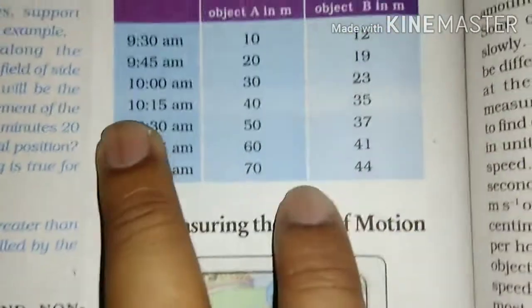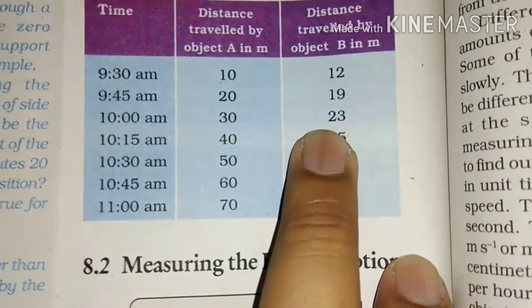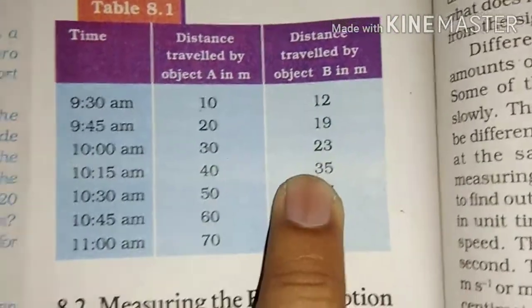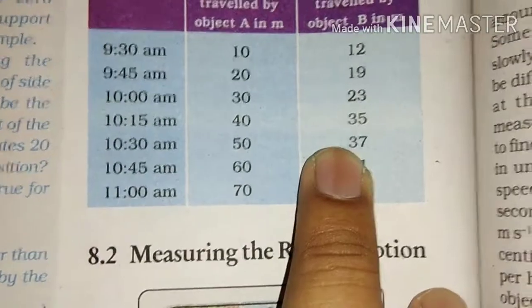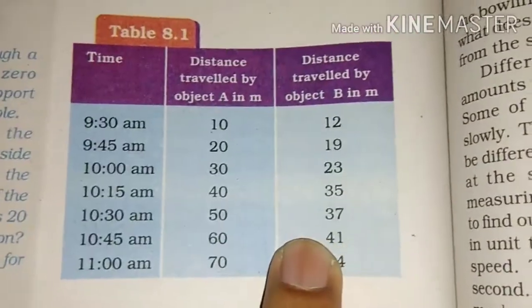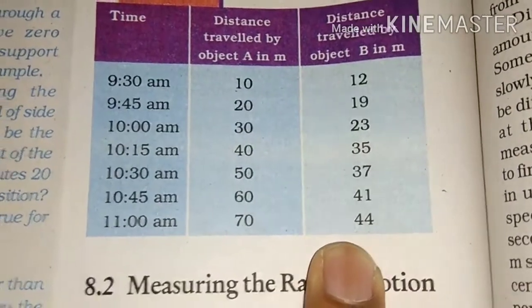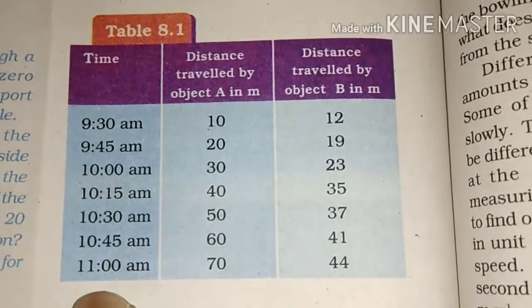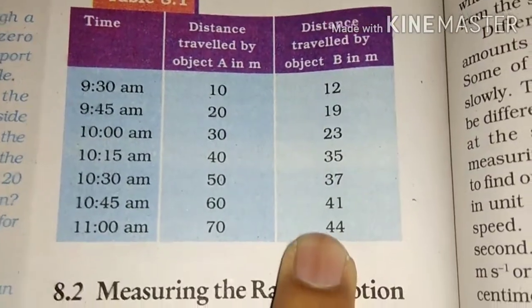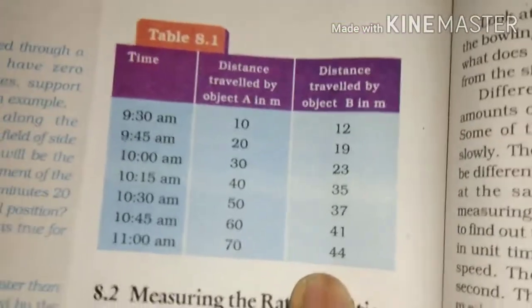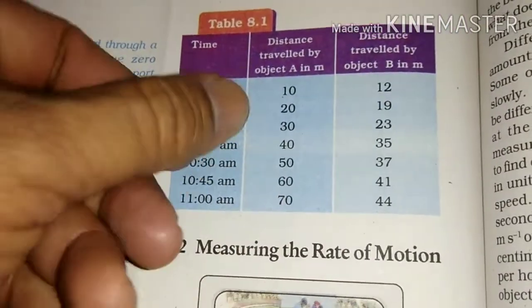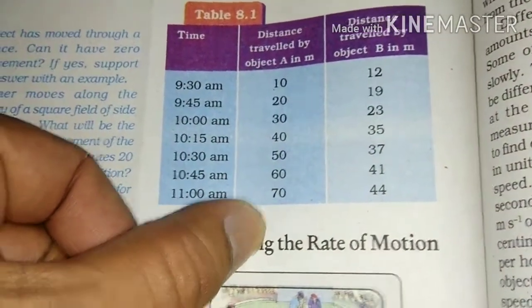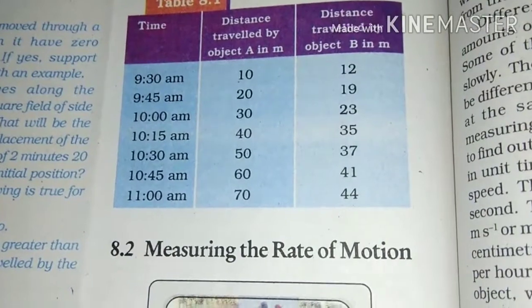Again, in the next 15 minutes, object B travels only 4 meters, then 2 meters, and then 3 meters distance. So with the help of this table you can practically give examples of what uniform motion means. These are the data for uniform motion and these are for non-uniform motion.